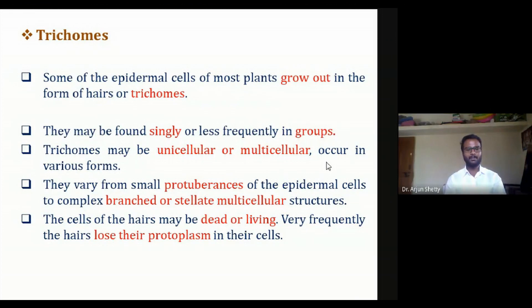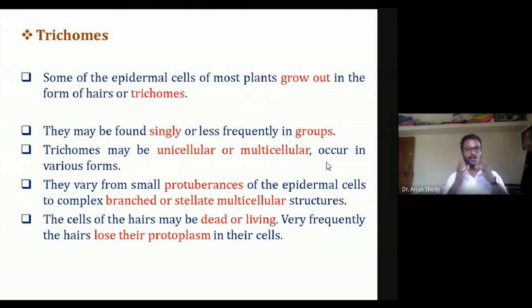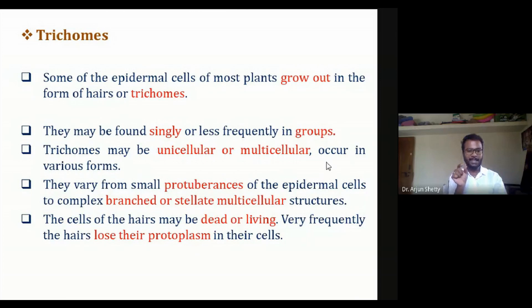Some of the epidermal cells of the plant body show hair-like outgrowths, and those are considered as trichomes. These trichomes may be found singly or in a group or mass. The outgrowth may be a single layer or in the form of a group, and trichomes may be unicellular or multicellular. Their shape may also vary.